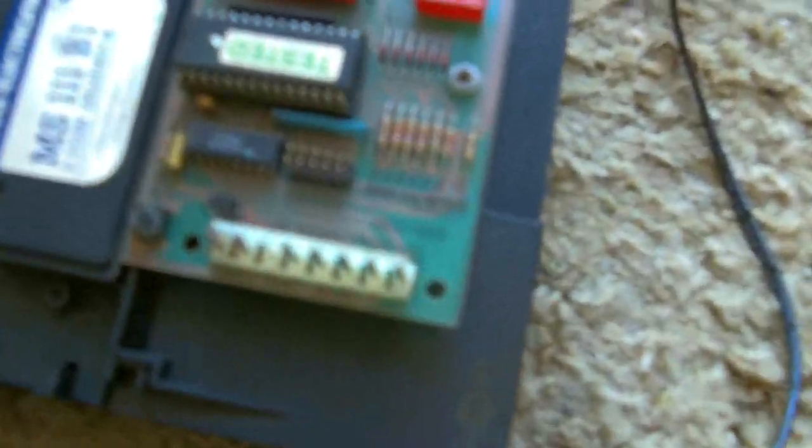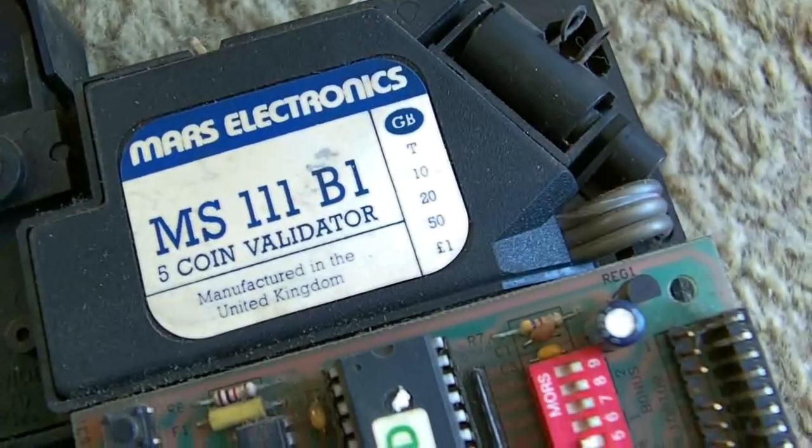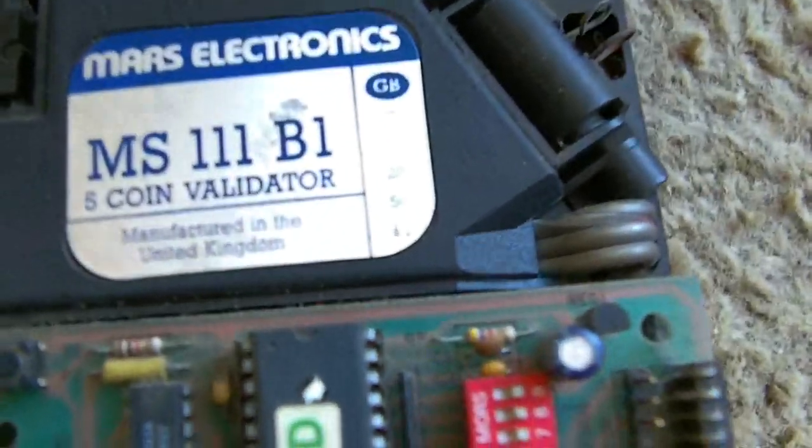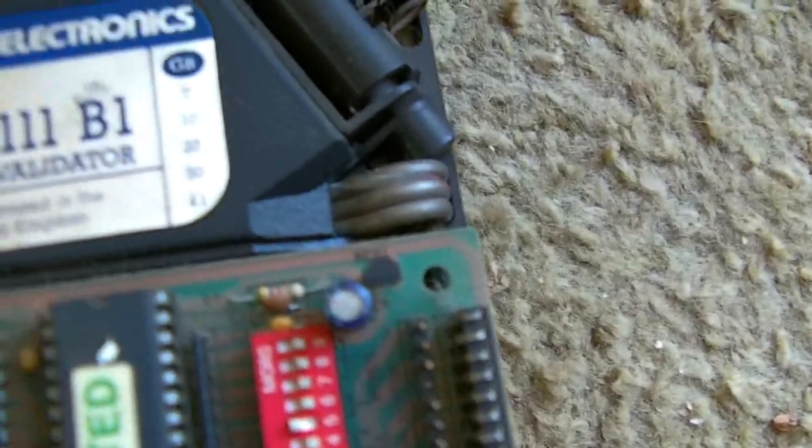So here we are. This is pretty much your standard one. It's a Mars Electronics MS-111, a multi coin validator. As you can see, you can get 10p, 20p, 50p and one pound coins in this.